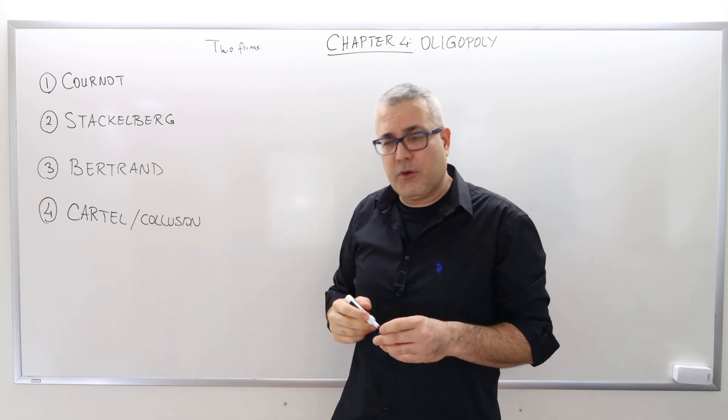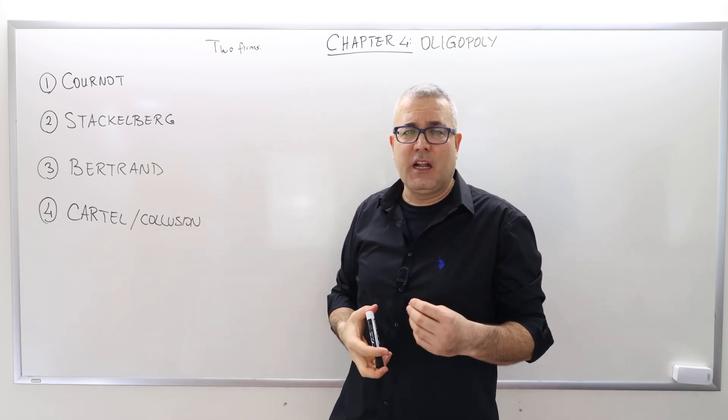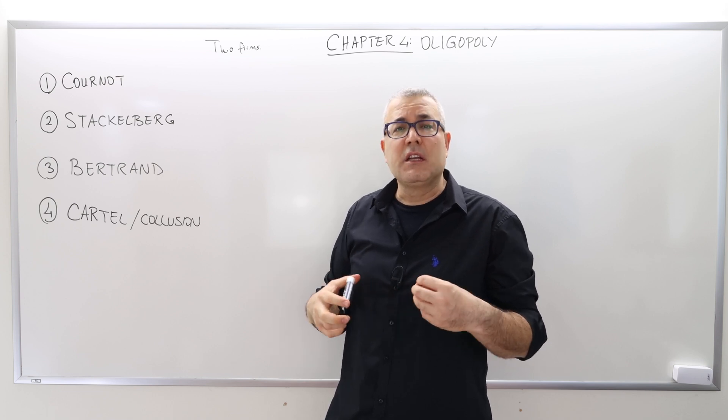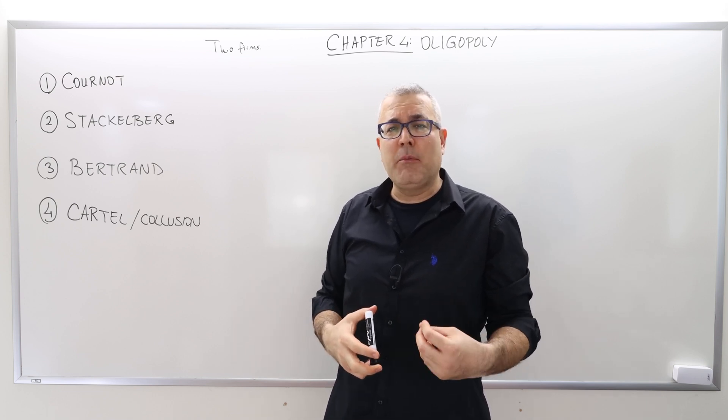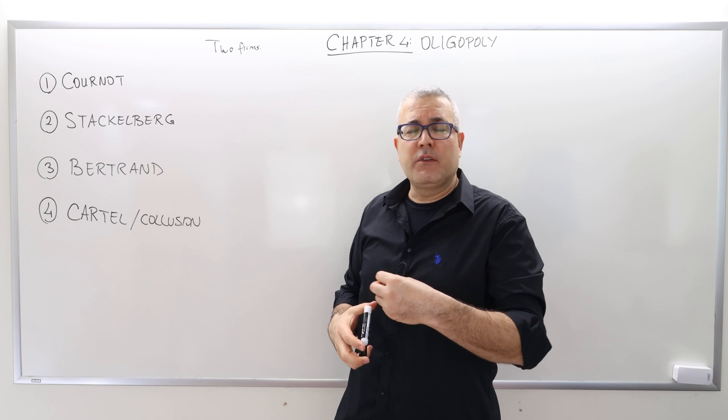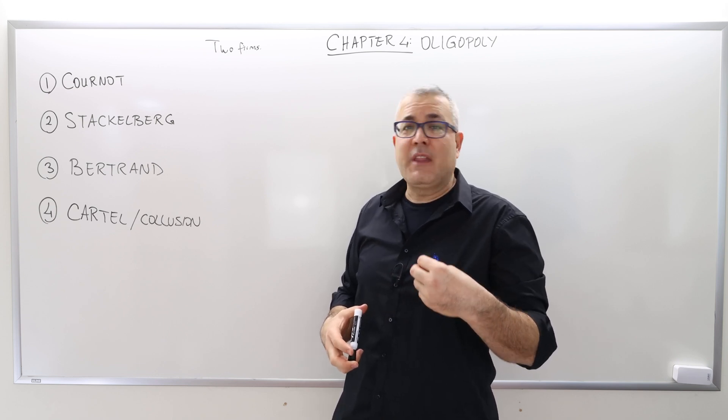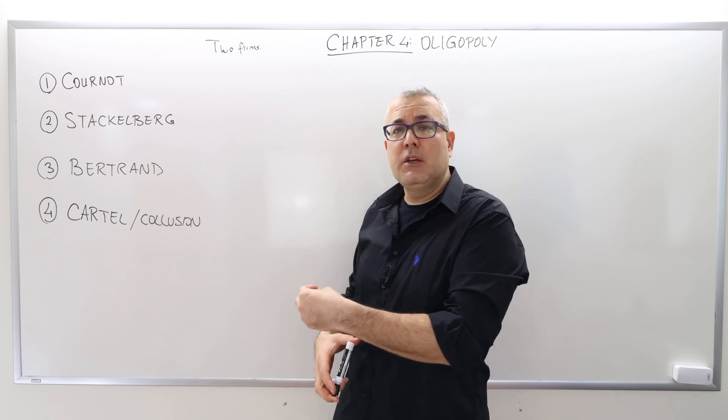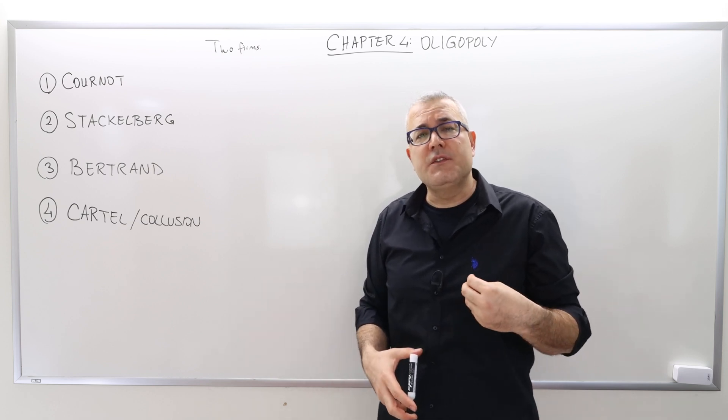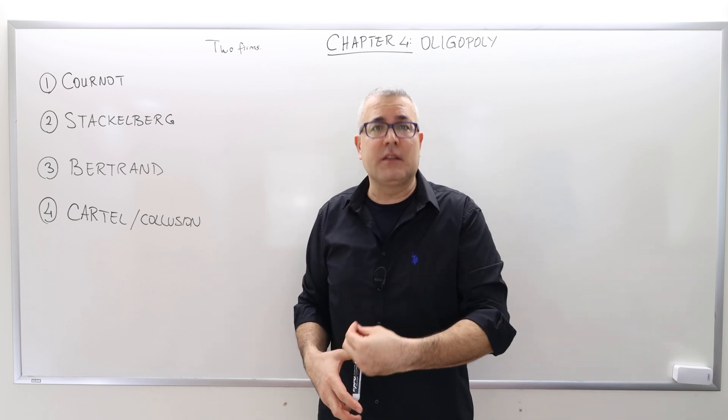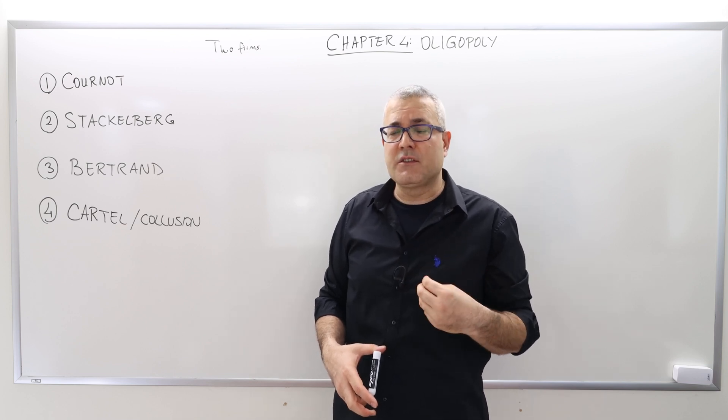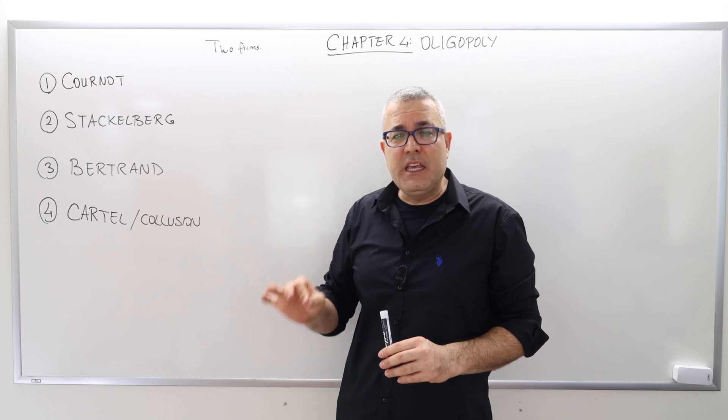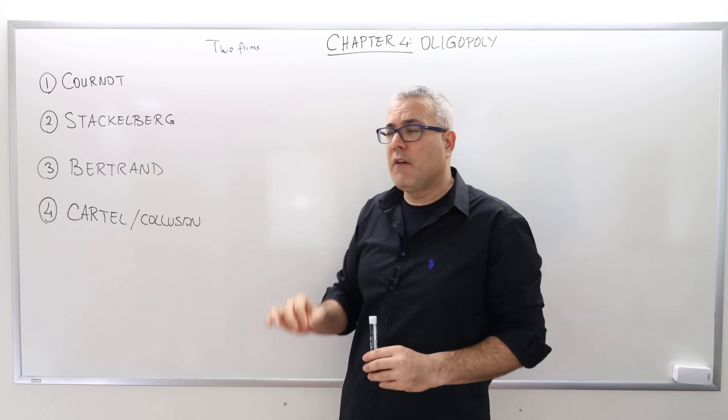And then the fourth topic is the cartel, the case where the firms get together, collude and act like a monopolist. And then we're going to discuss that their profit would be higher if they actually collude, but the collusion is usually not sustainable and the reasons why this is the case. So these four topics are the key takeaways of this chapter.